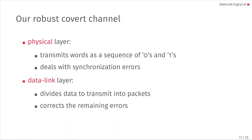We constructed the covert channel in two layers. First, the physical layer transmits data as a sequence of zeros and ones and also deals with desynchronization errors. Then we have the data link layer that divides data to transmit into packets and corrects the remaining errors.